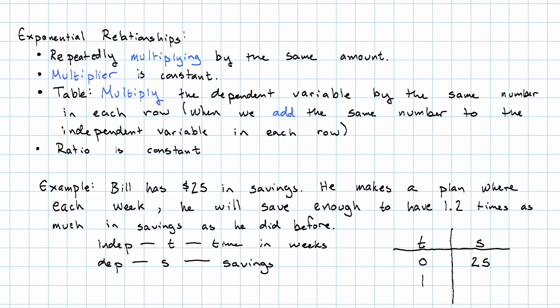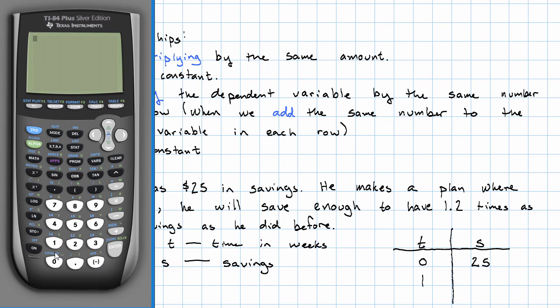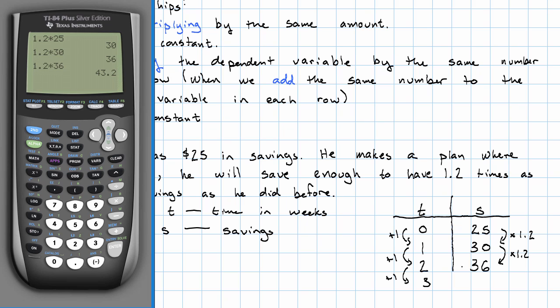After one week, he has, let's see, 1.2 times 25. After one week, he has $30. After two weeks, he has $36 and so on. Every time we add one to the number of weeks, we multiply his savings by 1.2. Let's go one more week, we get $43.20. But we just continue in that pattern.